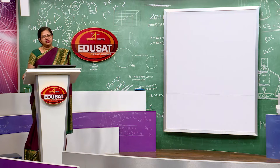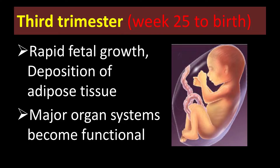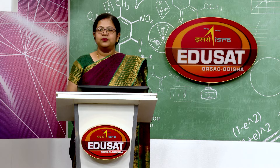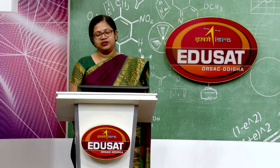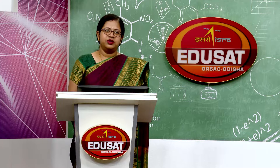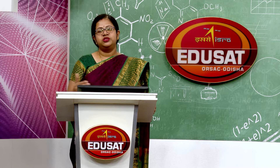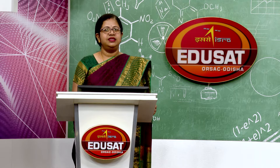In the third trimester, from week 25 till birth, since the organs and organ systems have already been formed, rapid fetal growth will take place. There will be deposition of adipose tissue, the fetus will grow in size and become chubbier. The major organ systems will start to become functional by the end of the third trimester. At the end of this period, certain physiological processes will take place that help in expulsion of the child, which is called parturition.